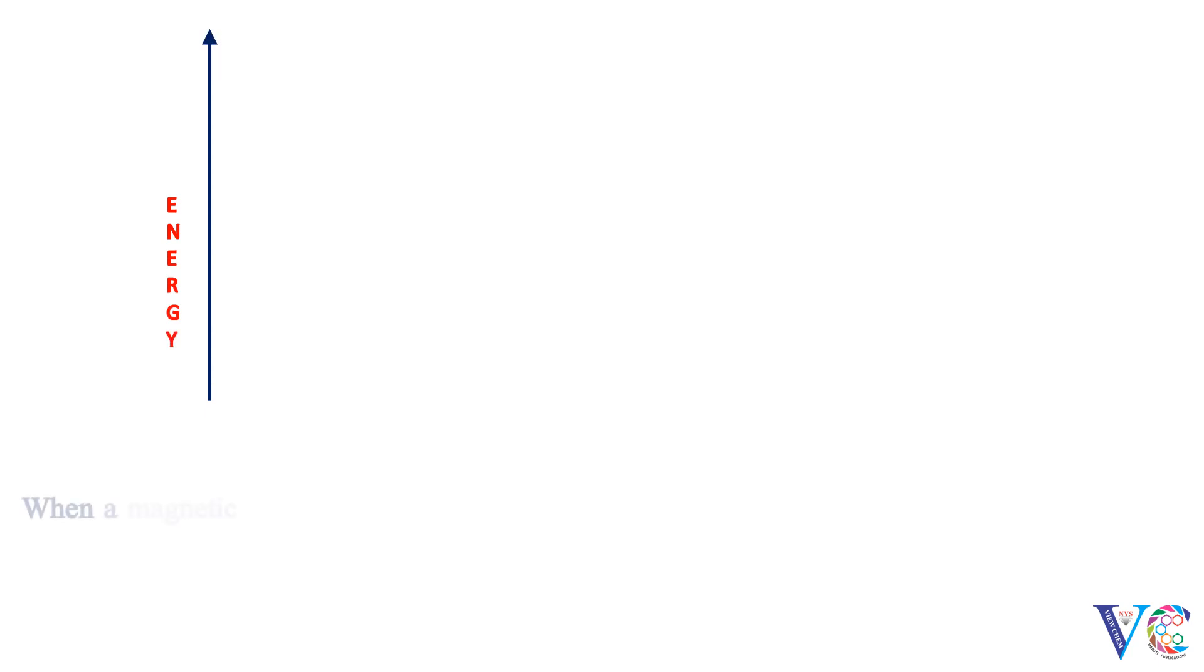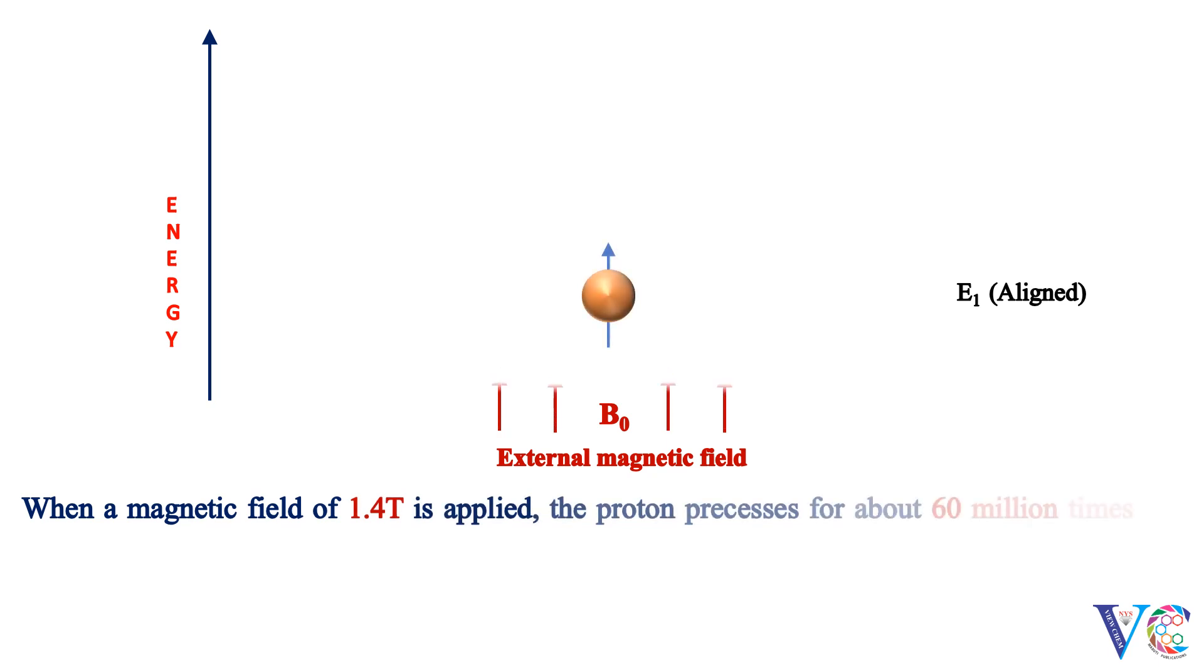When a magnetic field of 1.4 tesla is applied, the proton precesses for about 60 million times per second. Such NMR spectrum is called 60 MHz NMR spectrum.